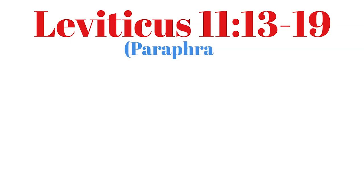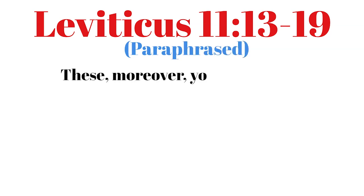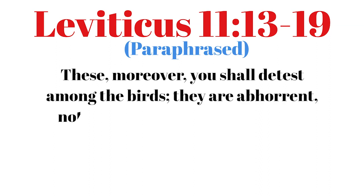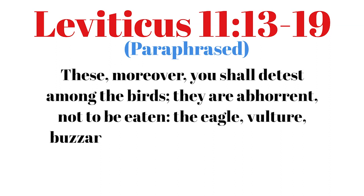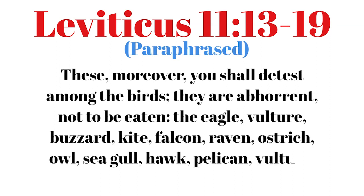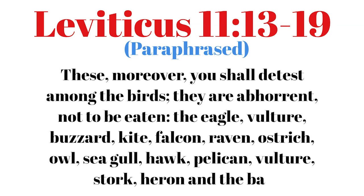Leviticus 11:13-19 (Paraphrased) — These, moreover, you shall detest among the birds; they are abhorrent, not to be eaten: the eagle, vulture, buzzard, kite, falcon, raven, ostrich, owl, seagull, hawk, pelican, vulture, stork, heron, and the bat.